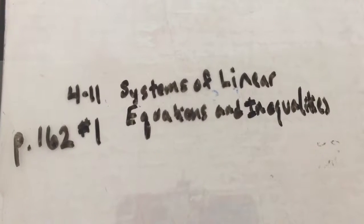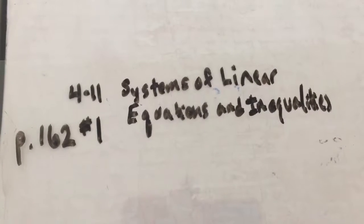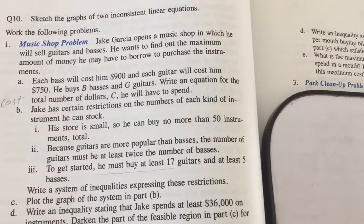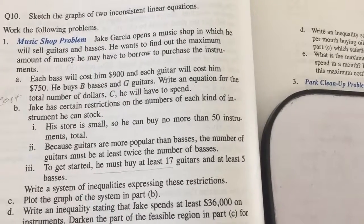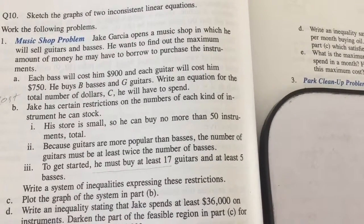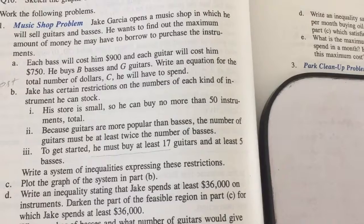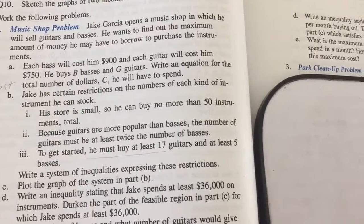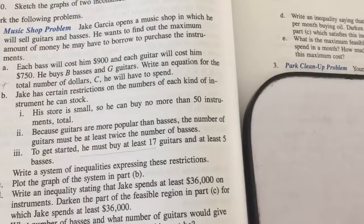This video looks at a question in section 4.11 about systems of linear equations and inequalities, page 162, number 1. The question asks us to consider a music shop problem where Jake Garcia opens a music shop selling guitars and basses. He wants to find out the maximum amount of money he may have to borrow to purchase the instruments. We are to write a cost function in part A. Each bass costs $900 and each guitar costs $750. He buys B basses and G guitars — write an equation for the total dollars C he will spend.